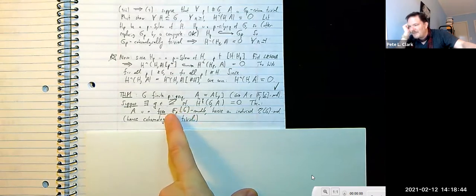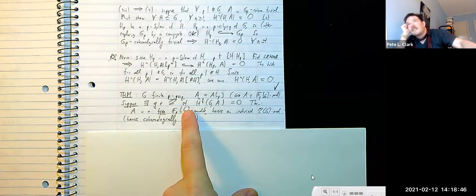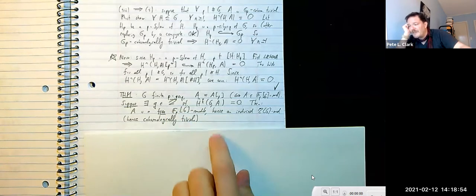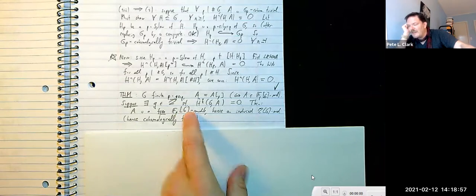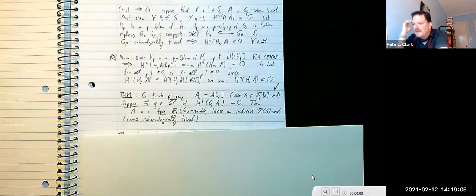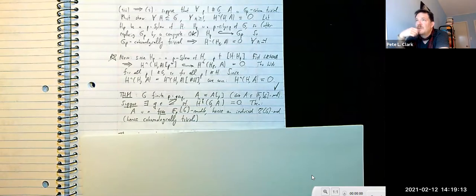We discussed induced modules: anything of the form X[G], meaning Z[G] ⊗ X for any abelian group X — those are precisely the induced modules. So F_p[G] or any group ring R[G] would be an induced Z[G]-module. We proved that induced G-modules are cohomologically trivial.